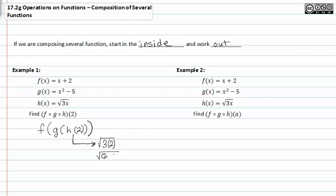So this is what I'm going to substitute in for h of two. So now I have f of g of square root of six.